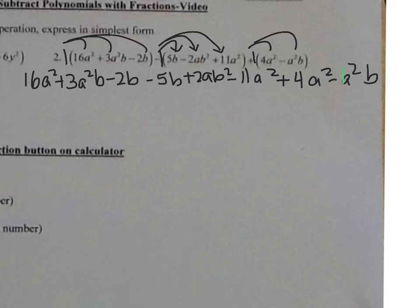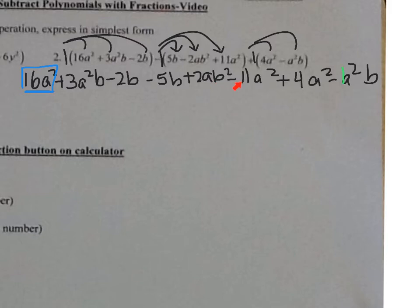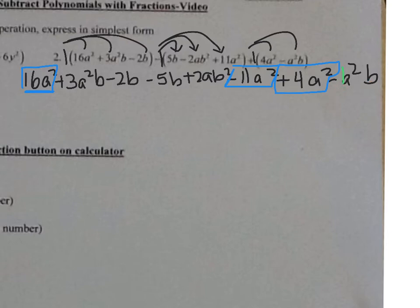Remember, in front of that a squared b there's really a 1 there. So let's look for like terms. I have 16a squared — I'm looking for another a squared. There's one with a b attached, so I can't use that. Then I have negative 11a squared here, and positive 4a squared next to it. So we have 16 minus 11 plus 4 — you could plug that into the calculator — and that gives me 9. So that's 9a squared.